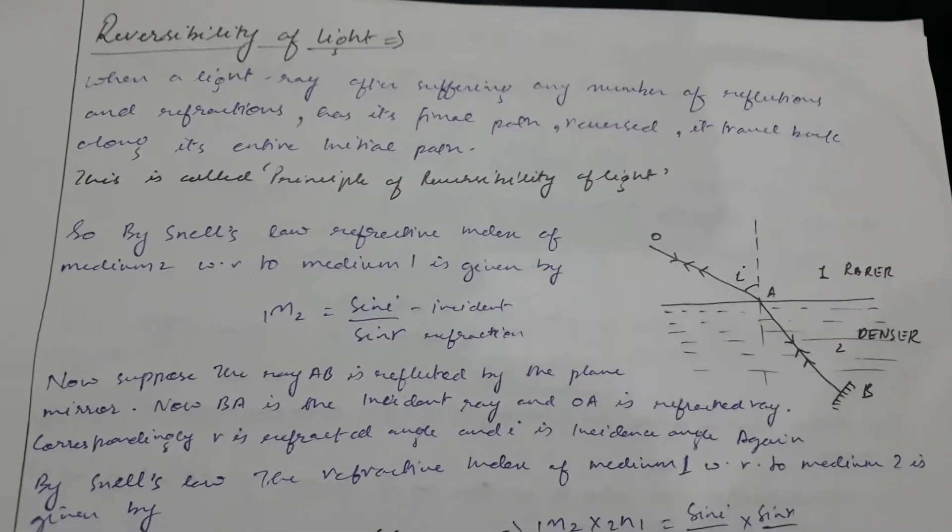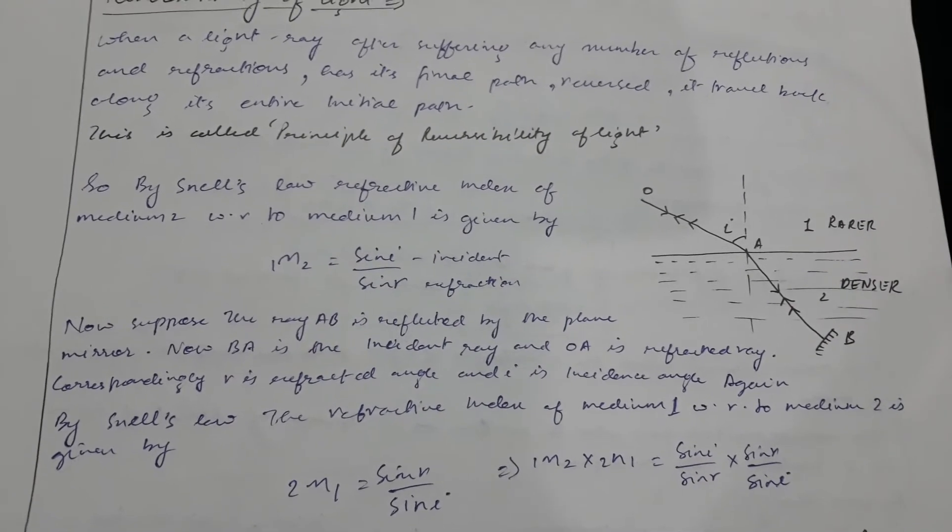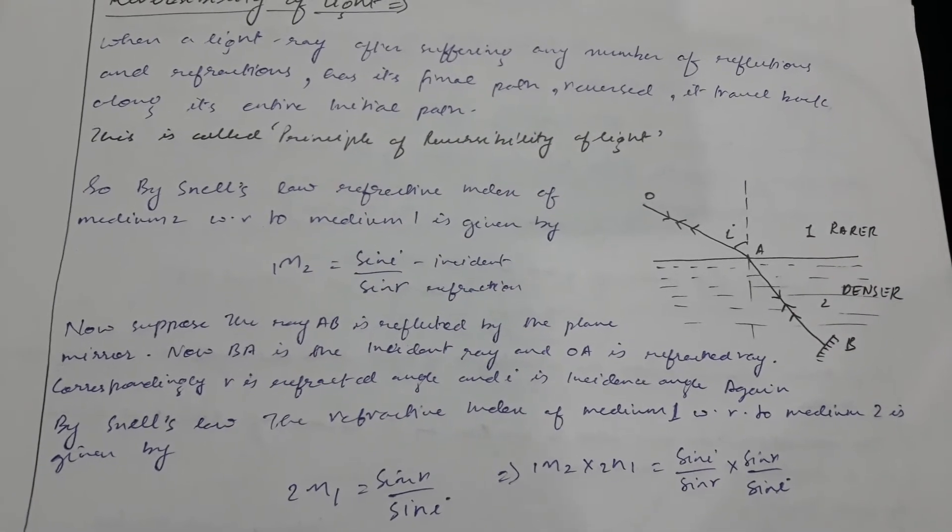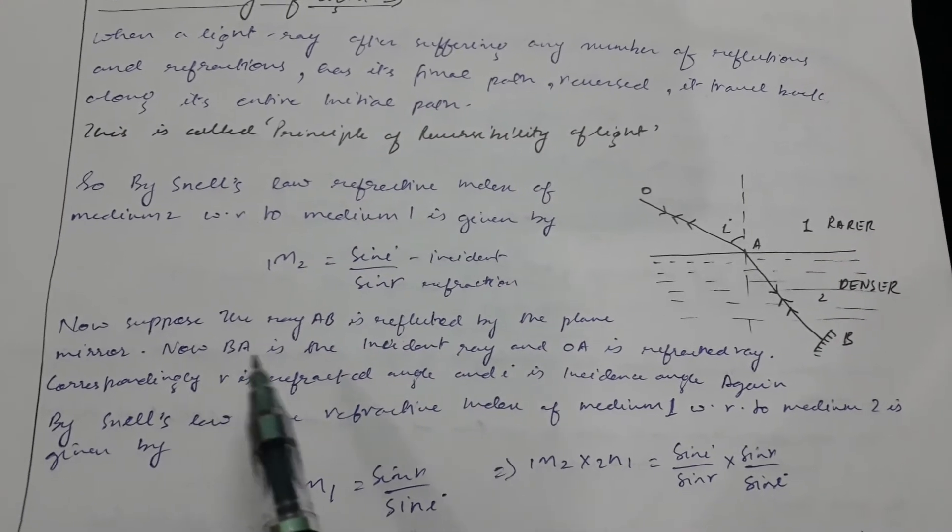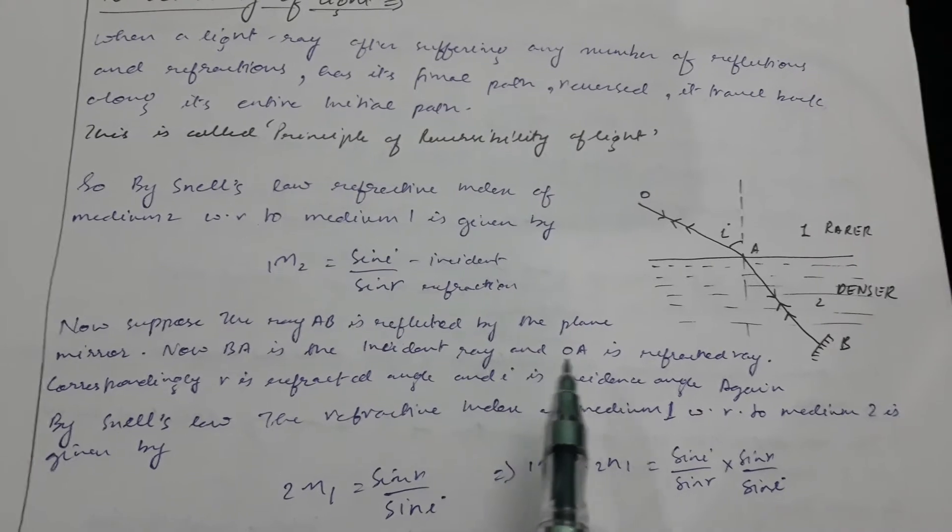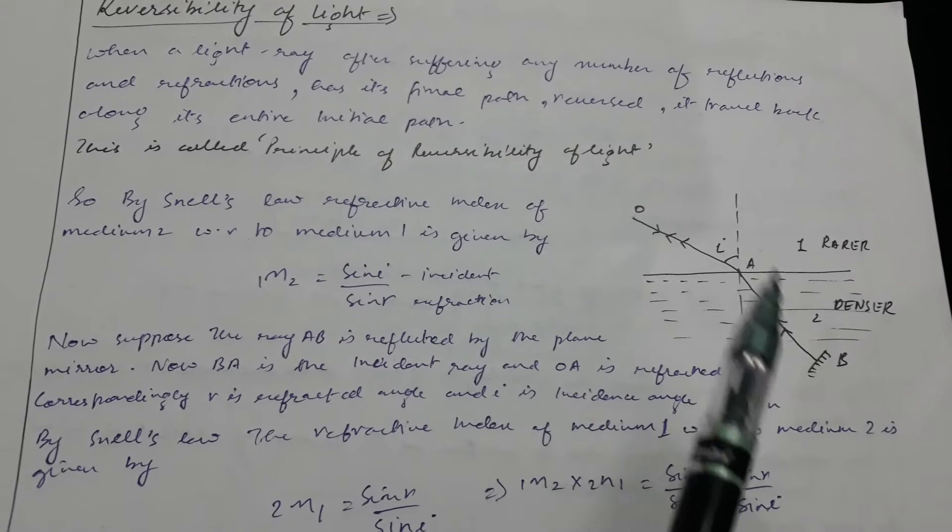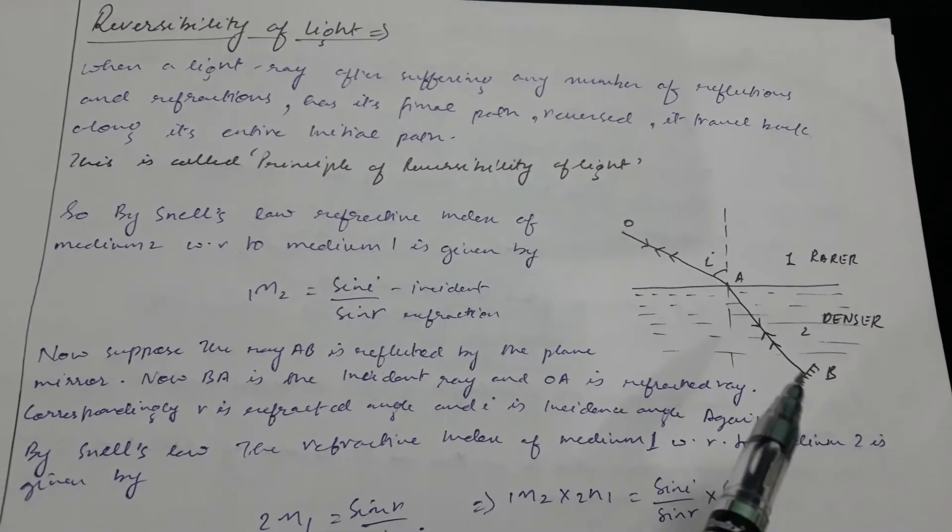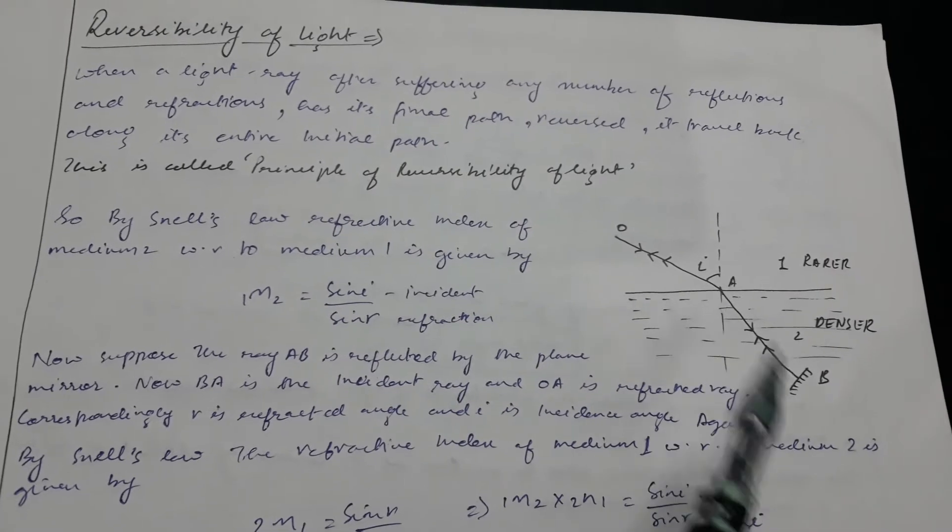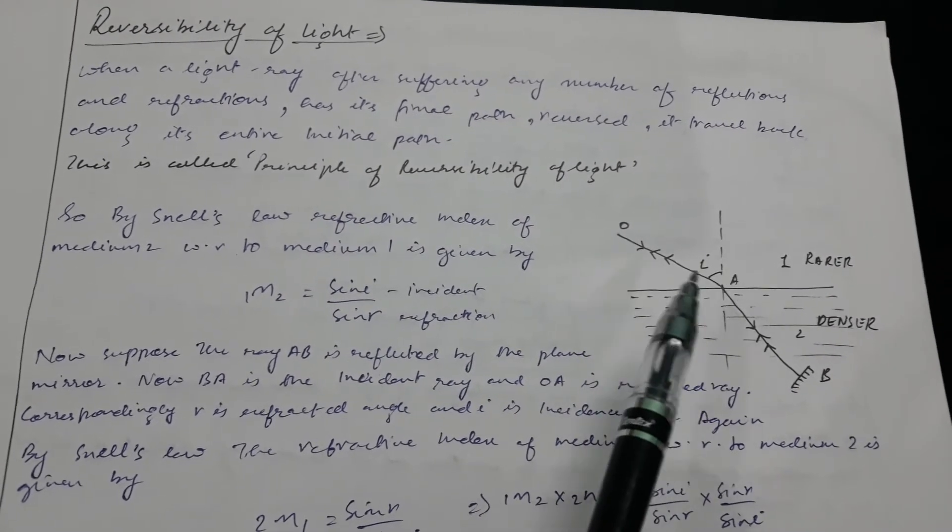Now suppose the ray AB is reflected by the plane mirror. Now BA is the incident ray and OA is the refracted ray. Suppose this ray is reflected by a plane mirror, then this ray becomes the incident ray and this ray becomes the reflected ray.